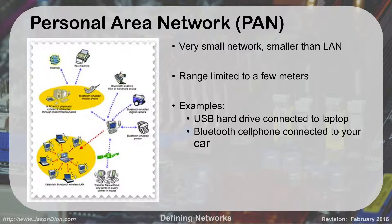The first one is PAN, the personal area network. It's a very small network, much smaller than a local area network, with a range usually limited to just a few meters. A great example is a USB hard drive connected to your laptop — that's considered a personal area network because the universal serial bus is acting as a network to connect it. If you have a Bluetooth cell phone connected to your car, that is a personal area network allowing those two devices to communicate to stream music or play phone calls over your speaker system.